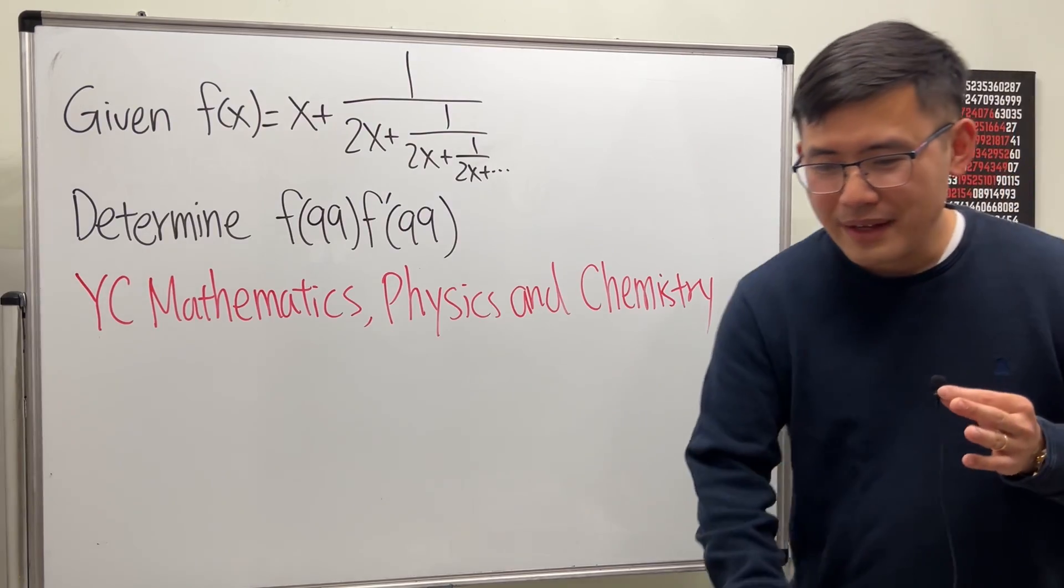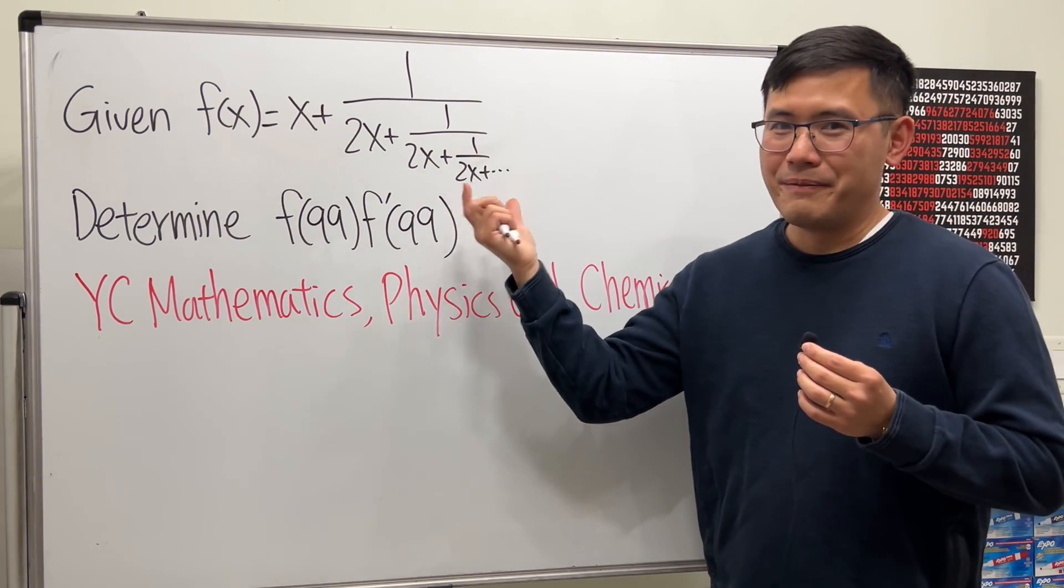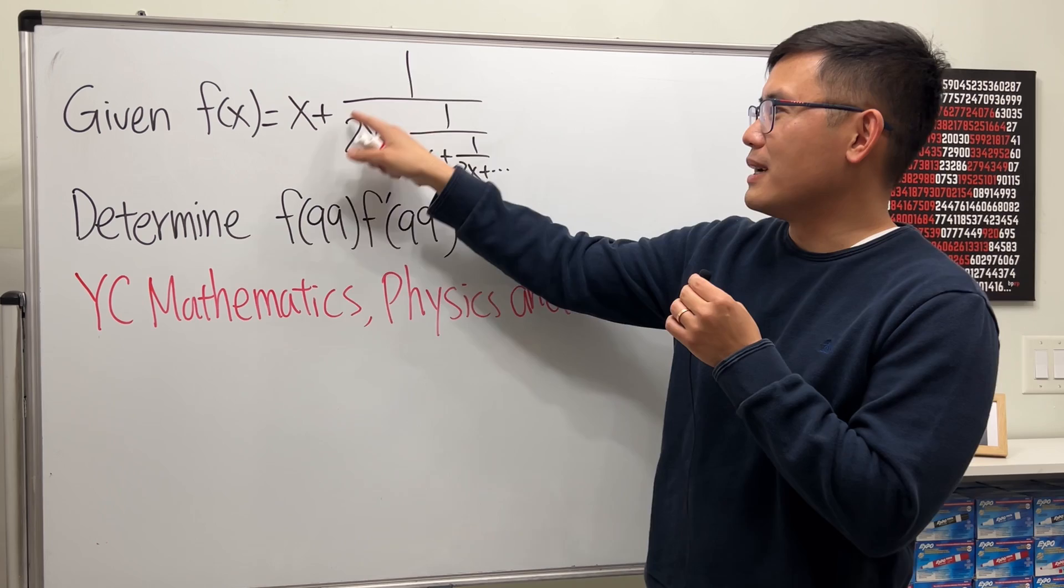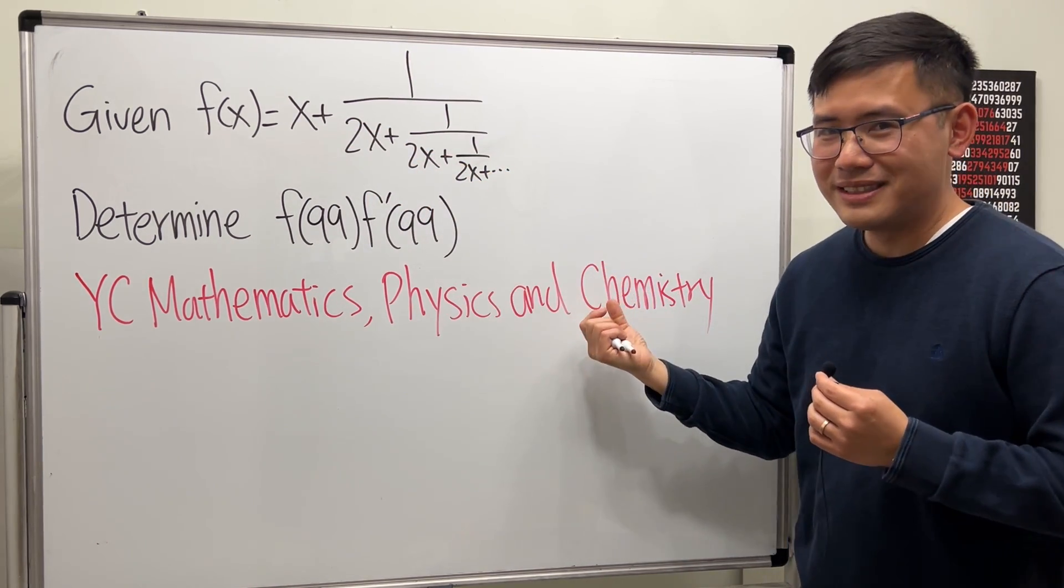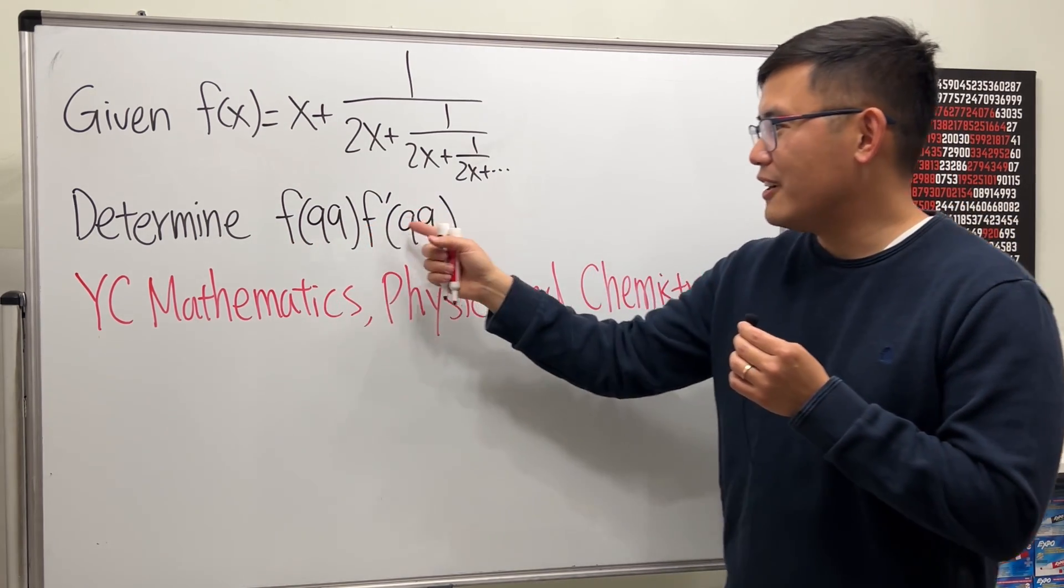I know in my videos I have to have some math. So let's take a look at this question, which is the question from his video. We have a function f of x is equal to x plus 1 over 2x plus 1 over 2x plus 1 over 2x. And this right here continues. And our goal is to find out the value for f of 99 times f prime of 99.